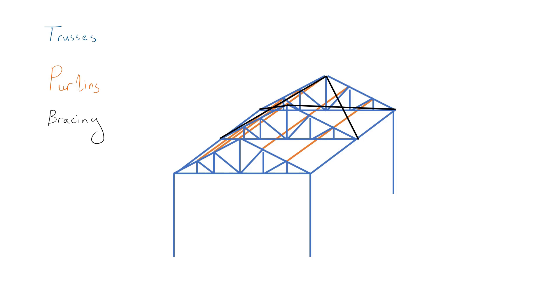The primary function of the purlins is to transfer loads to the top cord of the truss, but they can also act as part of the bracing system. Bracing is usually provided in the planes of both the top and bottom cords, but it is not required in every bay because lateral forces can be transferred from one braced bay to the other through the purlins.